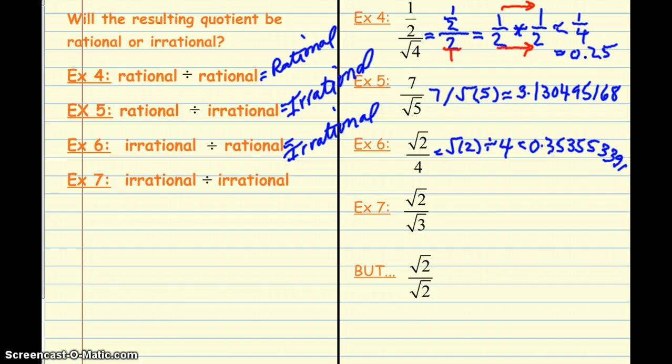Okay, last two examples. Irrational divided by irrational. We have the square root of two divided by the square root of three. Okay, so enter that into your calculator. And when you hit enter, you get 0.816429658. And again, this is irrational.